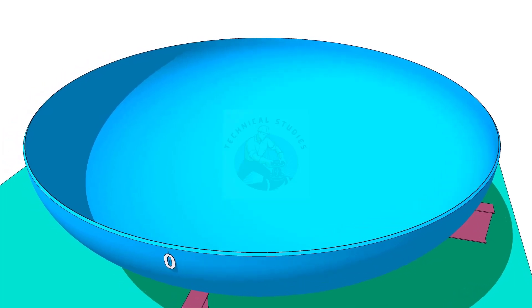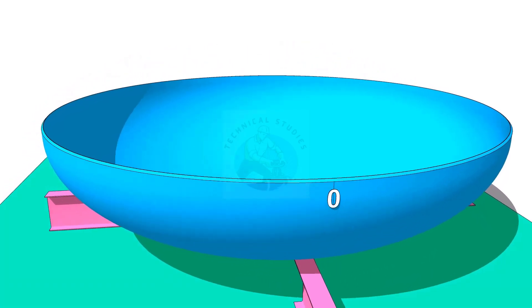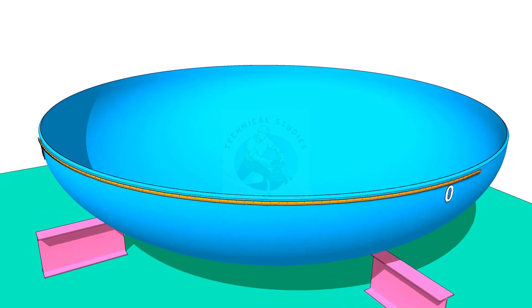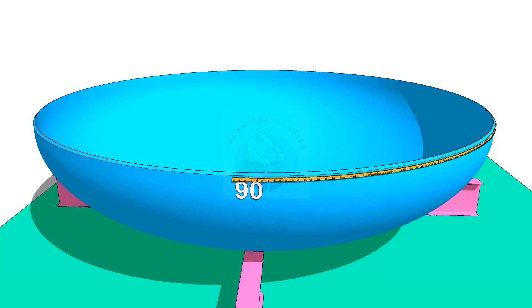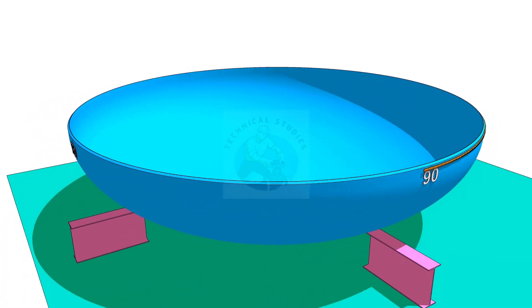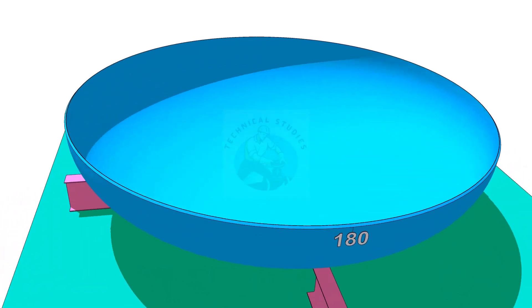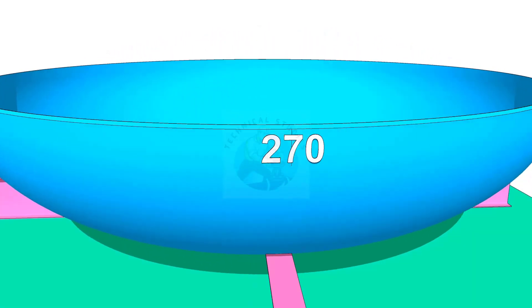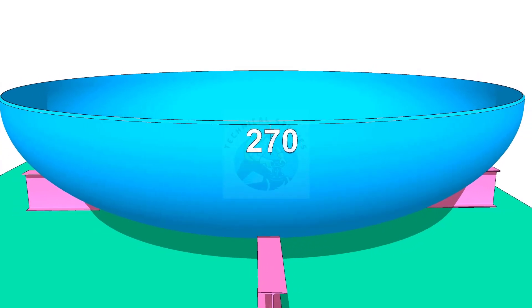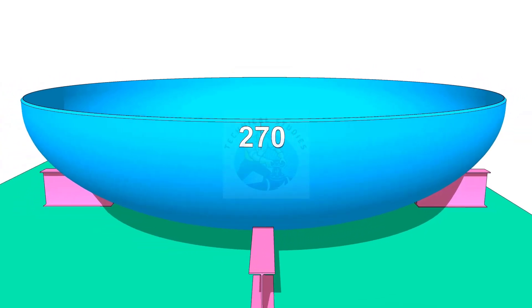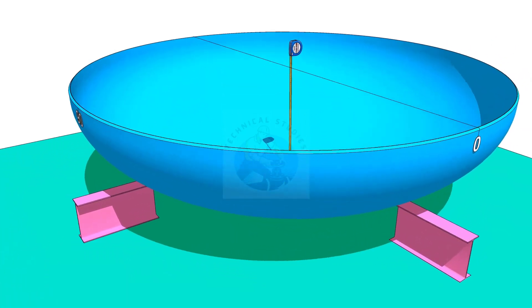Divide the circumference of the dish end exactly into four equal parts and name as shown. Check the height of the dish and maintain the height as required.